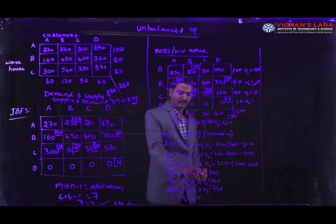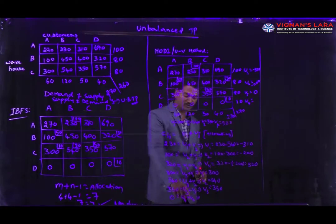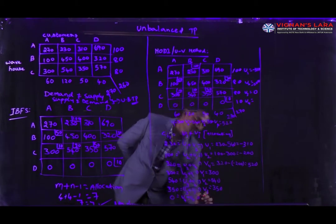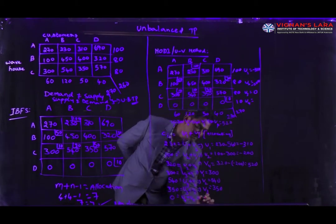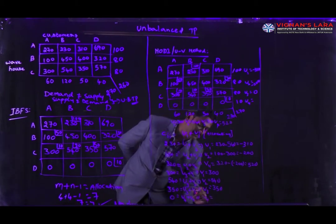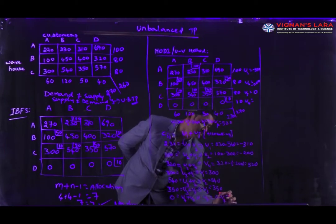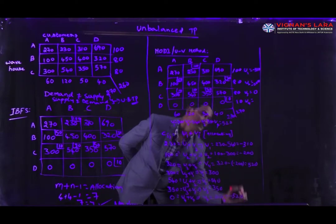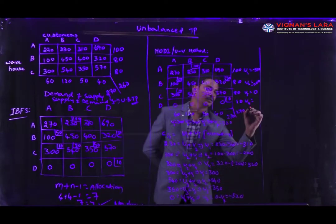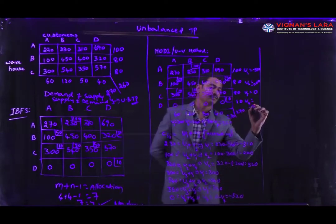We now know v1 = 300, v2 = 540, v3 = 350, v4 = 520. Coming to the last equation: u4 = 0 − v4 = 0 − 520 = −520. So u4 = −520.